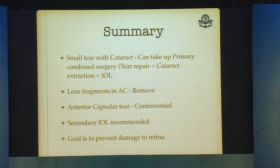In summary: a small tear with cataract can be taken up for primary combined surgery. Lens fragments in the anterior chamber must be removed. Anterior capsular tear management is controversial. Secondary IOL is recommended, and the main goal is to prevent iatrogenic damage to the retina.